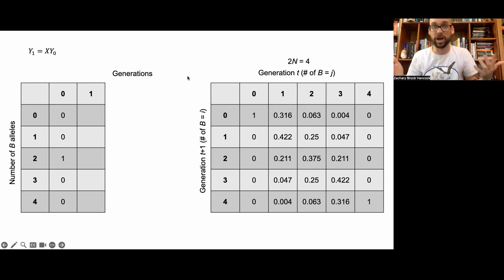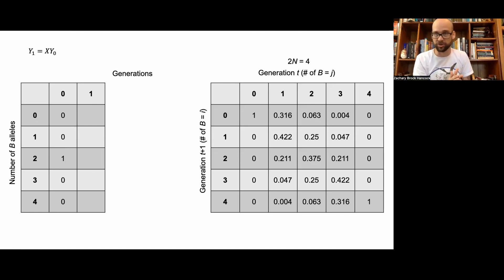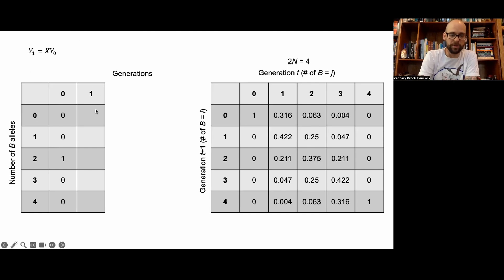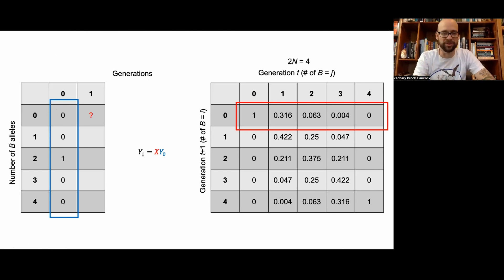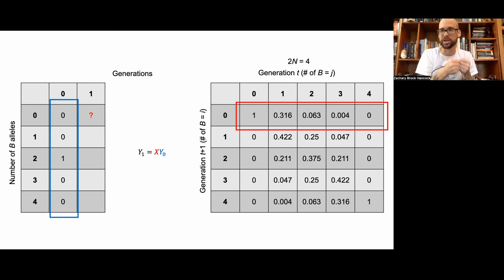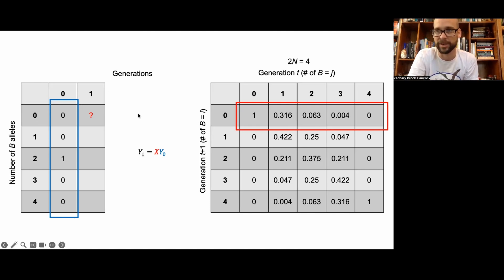To iterate, we use matrix algebra: Y1 = X × Y0, where X is the transition matrix and Y0 is the starting column. I've color-coded these to keep track: blue is what we multiply from the Y matrix, red is from the X matrix. The product of these two gives the entries for each new column of Y. Since we know we started with 2 alleles and not any other number, most of the multiplication in the first column is simply zero.